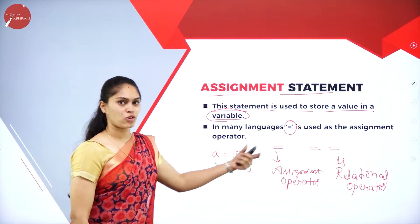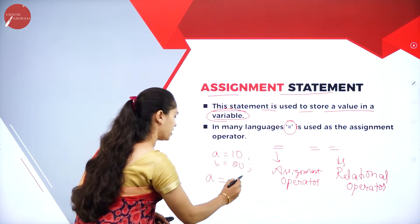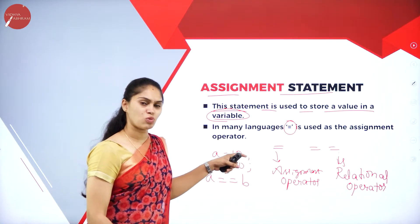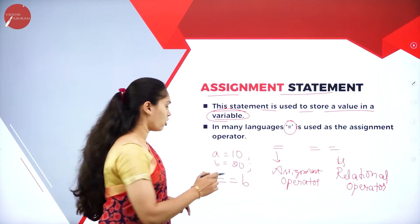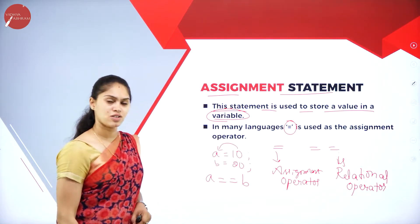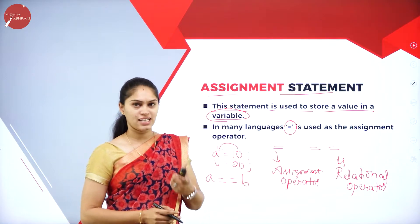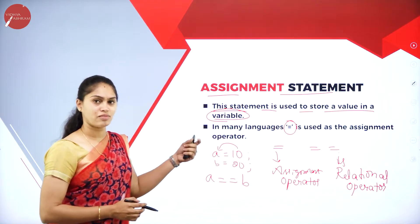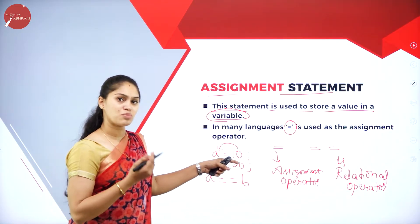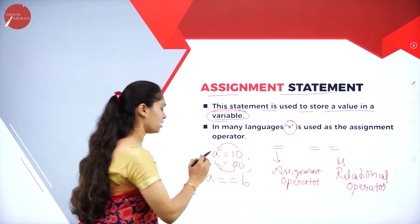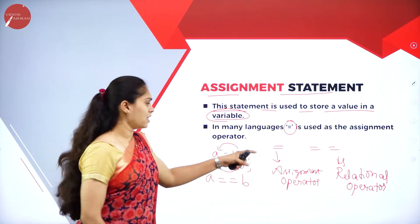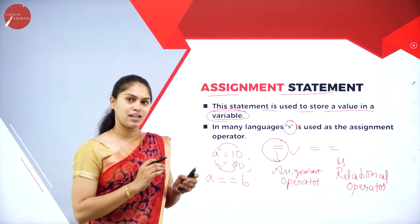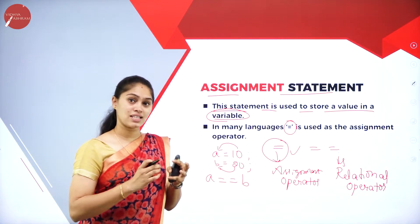An output statement displays the value of variables on a standard output device such as a monitor or printer. Keywords used for output include: output, display, write, or print. For example, 'print a' will display the value of a on screen. If a = 10, then 'print a' outputs 10.